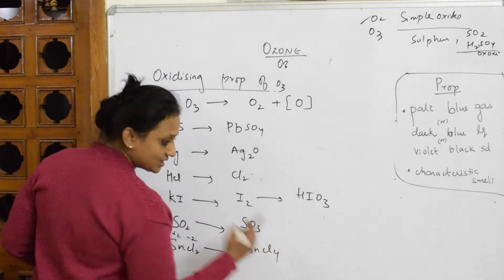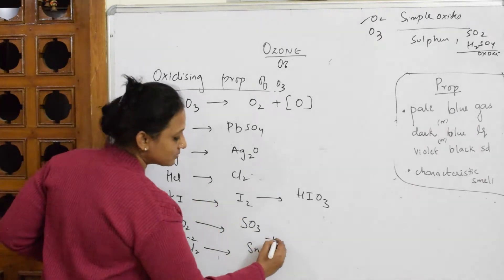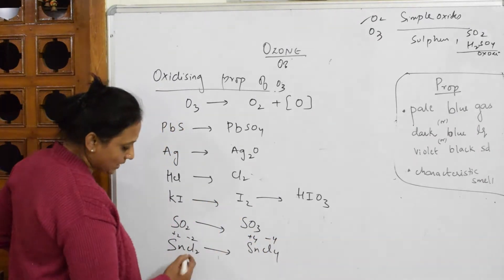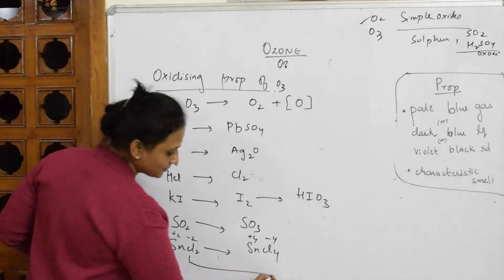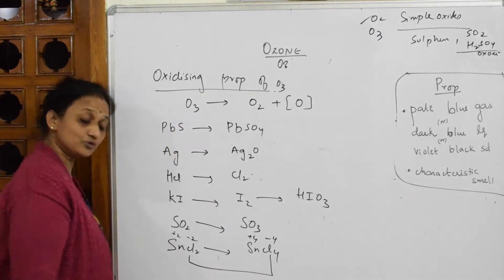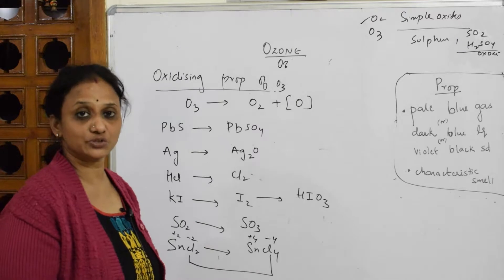Here when it comes it is minus 1 chlorine. 4 chlorines becomes minus 4. This is plus 4. So what happened from minus 4 to minus 2 to minus 4. It has gone to minus 2 to minus 4.